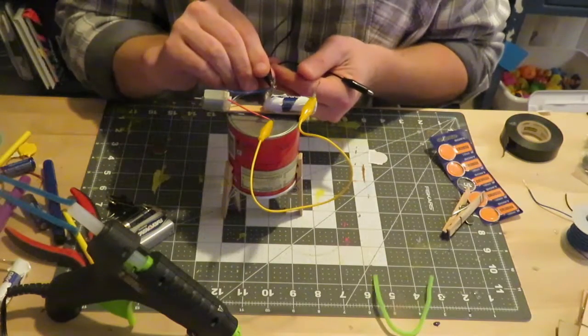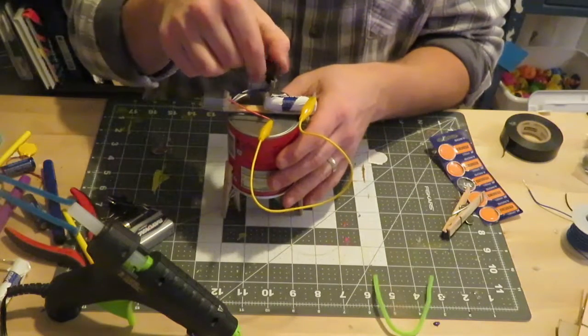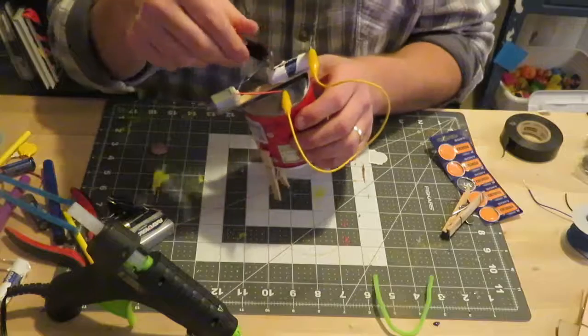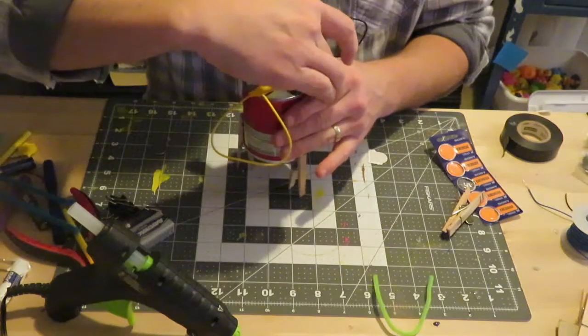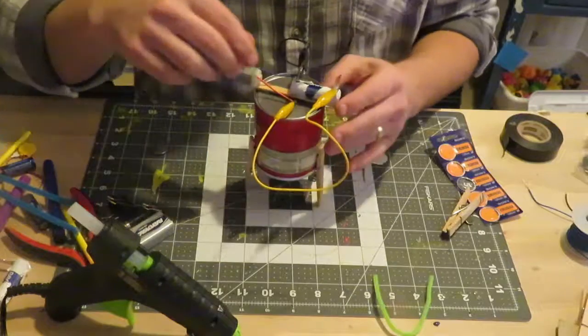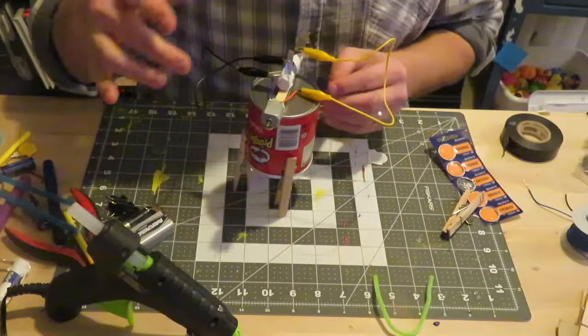And we'll do the same thing with the other wire, clip, clip, and then we should be in action. So now my robot is going to be able to get some power here when I make that move.